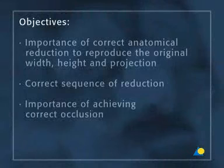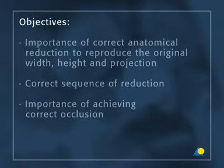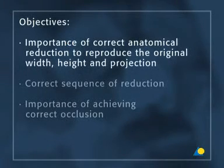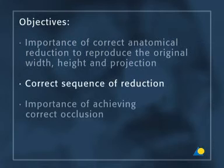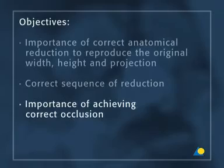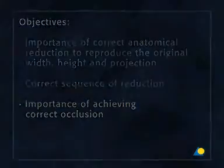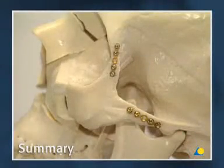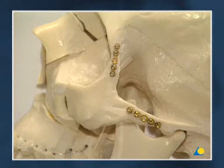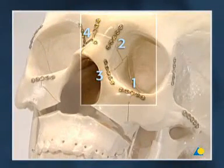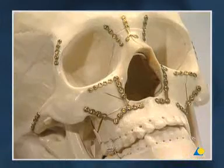The objectives of this exercise have been to understand three points: the importance of correct anatomical reduction of the facial buttresses to achieve the original width, height, and projection of the midface; the correct sequence for reducing a multifragmental midface fracture; and the importance of achieving correct occlusion. The main steps are: fixation of the zygomaticofrontal suture, fixation of the zygomatic arch, plating of the inferior orbital aperture and nasal frontal fracture, and fixation of the maxillary buttresses.